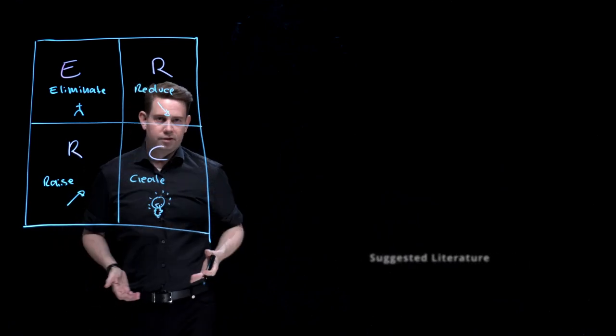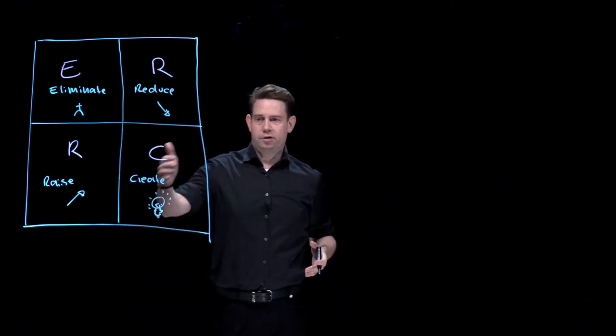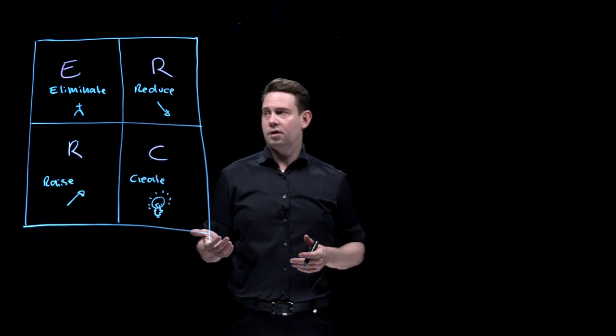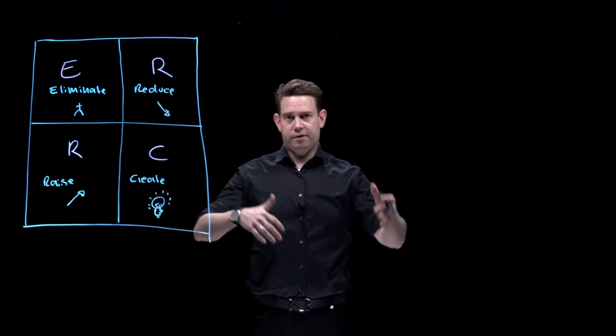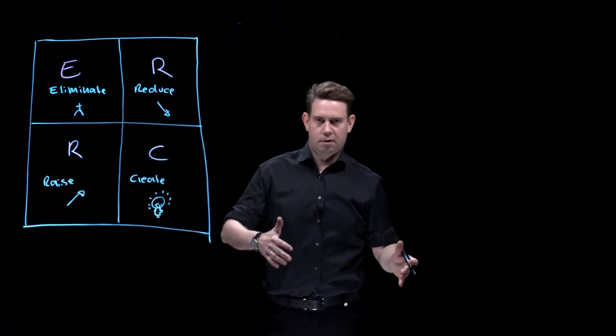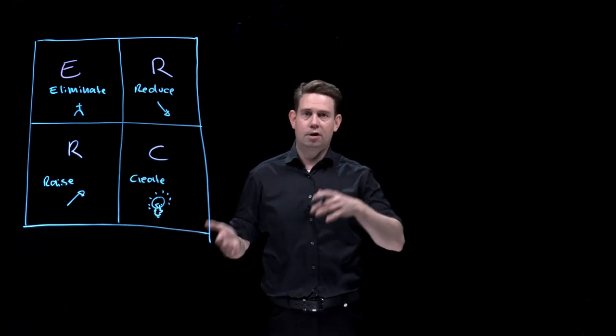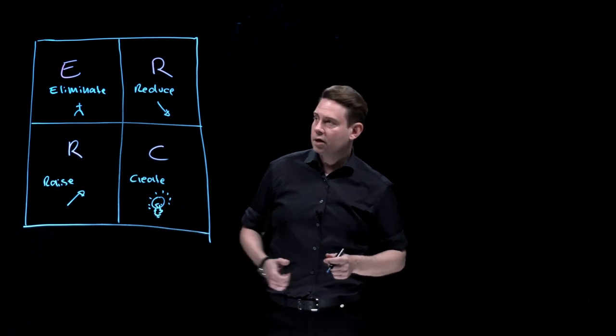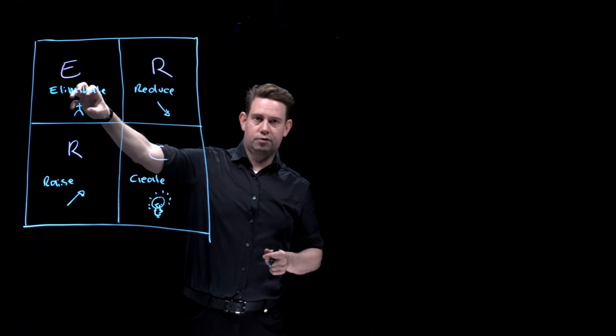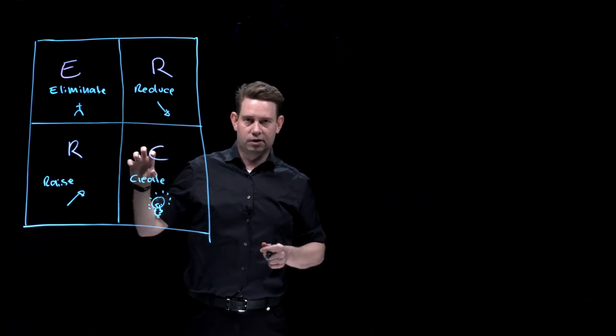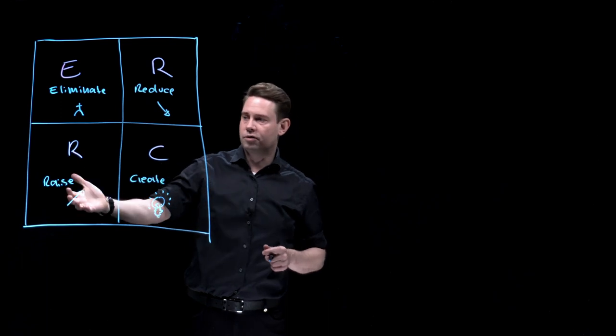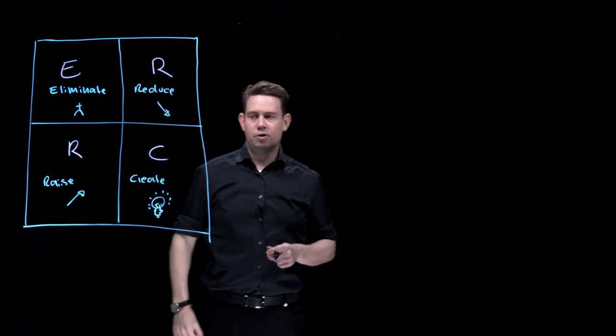And this framework is usually used in strategy processes. So we have a product, for example, a circus, and within the circus, to bring it from a very old-fashioned concept into the modern world, from like a circus with animals to Cirque du Soleil, what kind of things do we have to eliminate? What kind of things do we have to take out of the concept, like animals, for example? What do we have to reduce? What do we have to raise and what do we have to create?